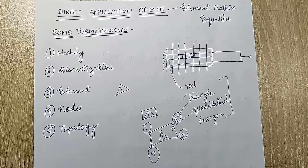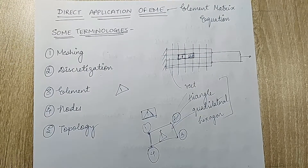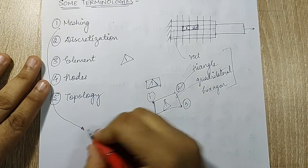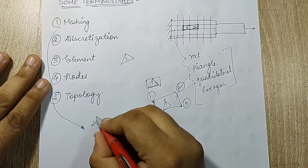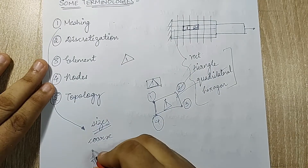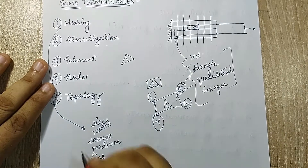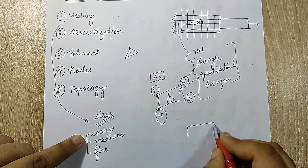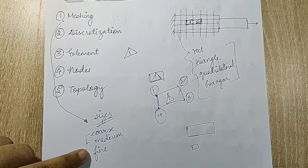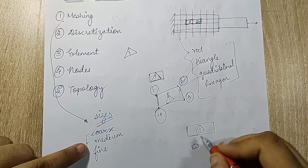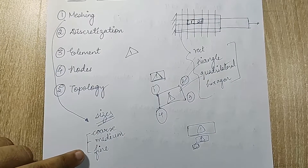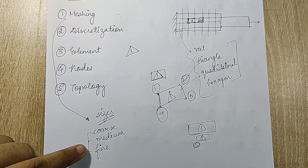There are various types of meshes. They can be of various shapes and sizes. When talking about sizes, there are three basic types: coarse mesh, where the element is bigger; fine mesh, where the element size is very small; and medium mesh, which is something in between. There are also in-depth meshing options available with the latest software.